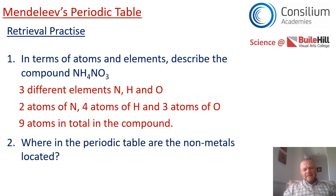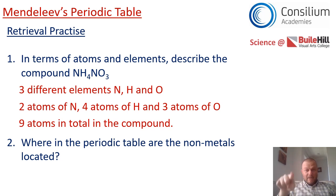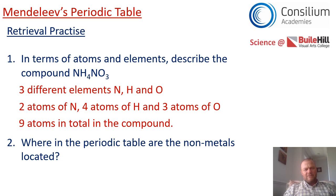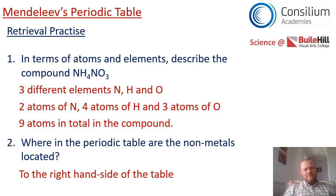Where in the periodic table are the non-metals located? If you remember the work we did in the last lesson, there was a line between boron and aluminium, and it caused a kind of step down which split the periodic table into two sections. So where are the non-metal elements — to the left or the right of that line? Well, they're to the right of that line. The non-metals are to the right-hand side of the periodic table.